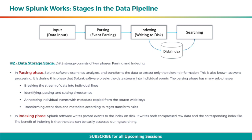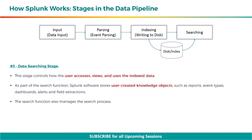In the indexing phase, Splunk software writes parsed events to the index on disk. It writes both compressed raw data and the corresponding index file. The benefit of indexing is that the data can be easily accessed during searching. In the data searching stage, you can control how you access, view, and use the indexed data.